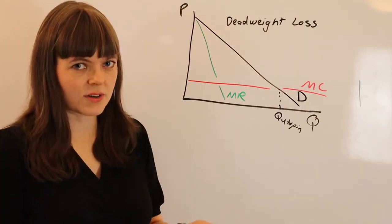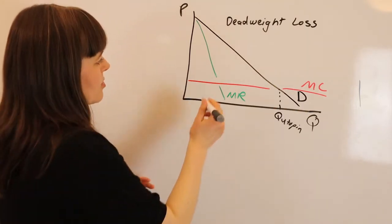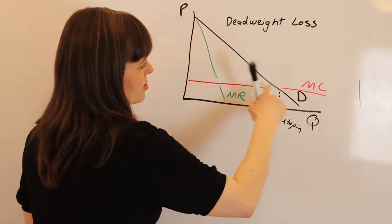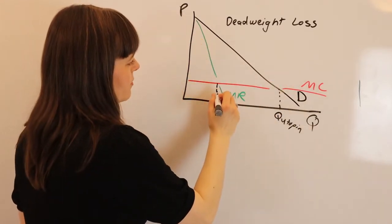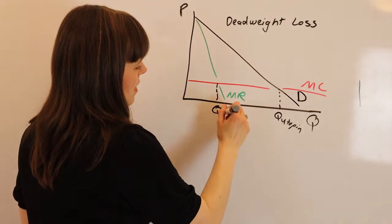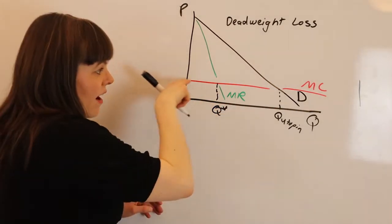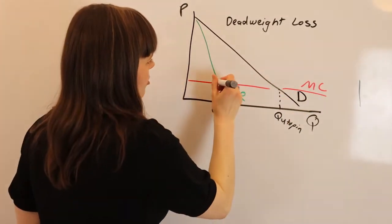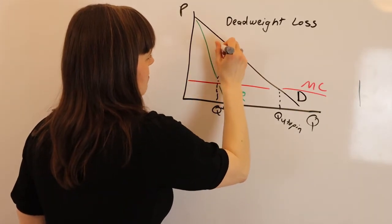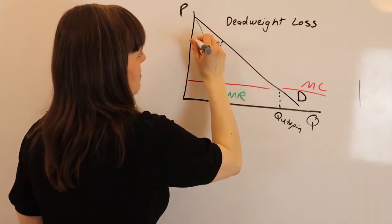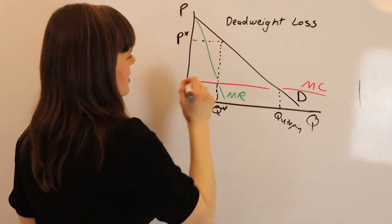But of course that's not the quantity that monopolies choose. Monopolies are going to choose the quantity where marginal cost equals marginal revenue. And they're going to price that quantity not at marginal cost, but as high as they can, marking it up as much as they can, which is up on the demand curve at P*.